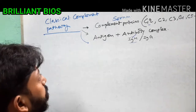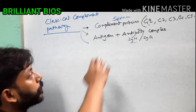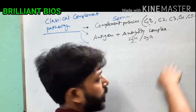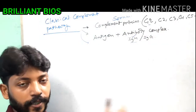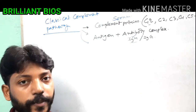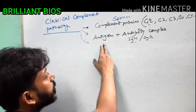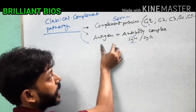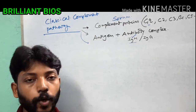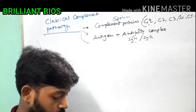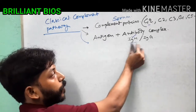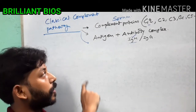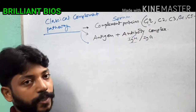The complement proteins include C1Q, C2, C3, C4, C5, C6, C7, C8, and C9. For the classical complement pathway, there must be an antibody-antigen complex formation. Soluble IgM or IgG alone cannot activate the C1Q initiator protein.